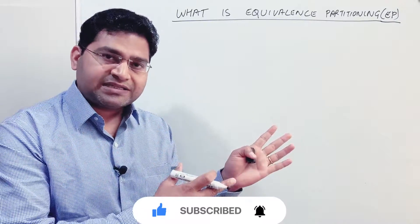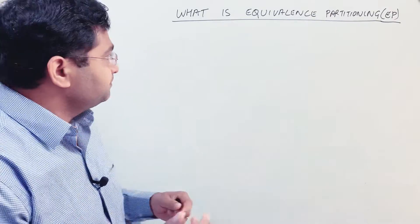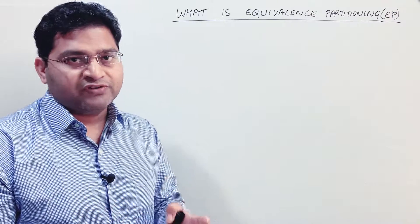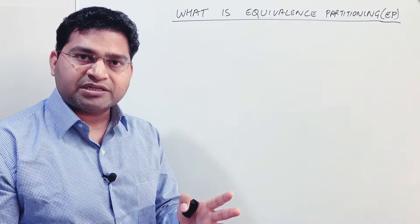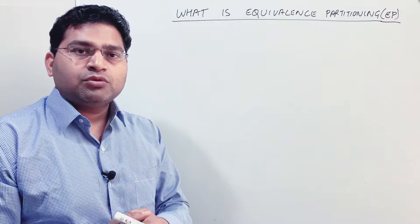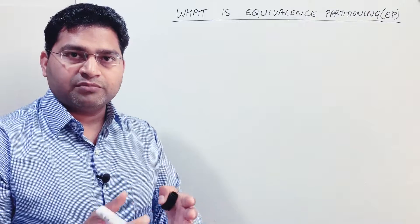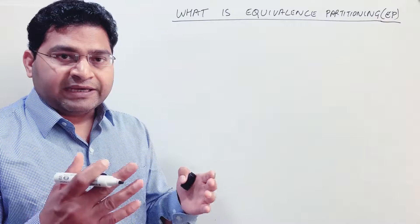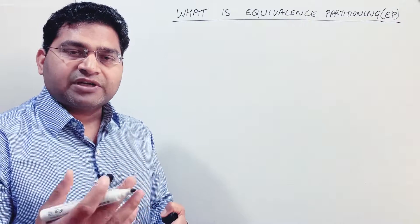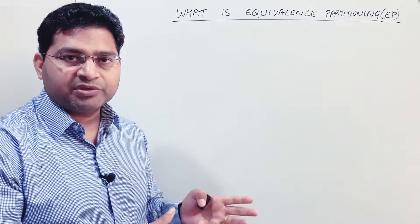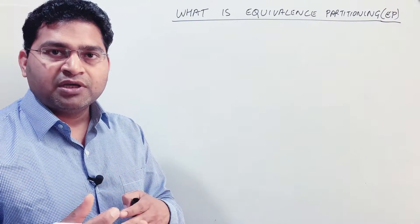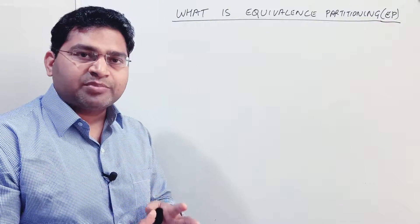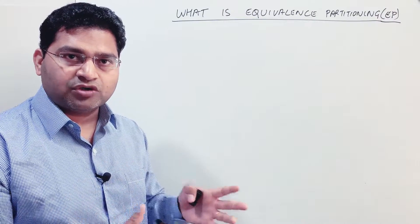Let's take an example to understand equivalence partitioning. Say for example you are testing an e-commerce website and there is a module for discounts. In e-commerce websites, sales are divided into different categories — for example, you spend $100 you get 5%, you spend $101 and above up to $200 you get another percentage of discount. So how can we have these partitions for testing that particular discount module?